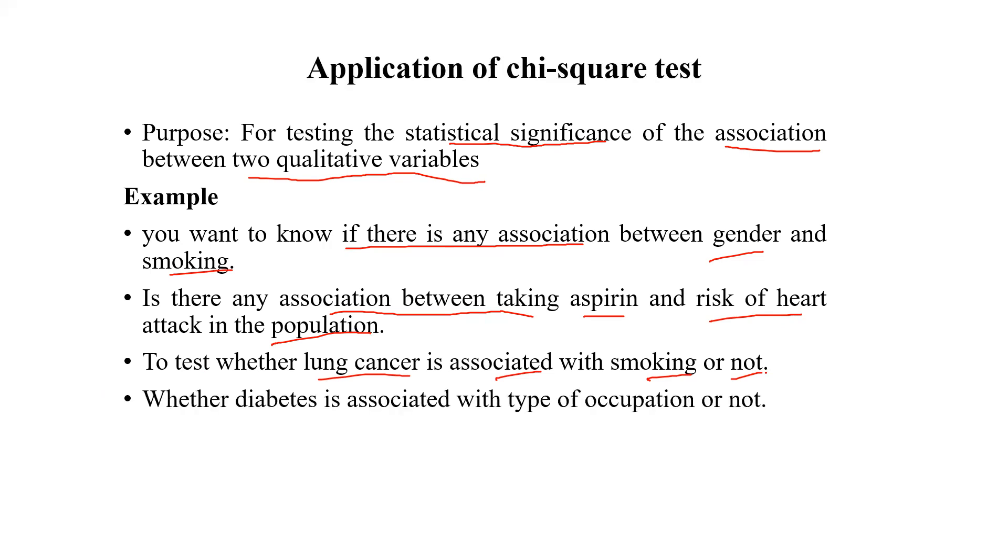Another example, if we are going to find the association between diabetes and type of occupations, we can apply the chi-squared test.